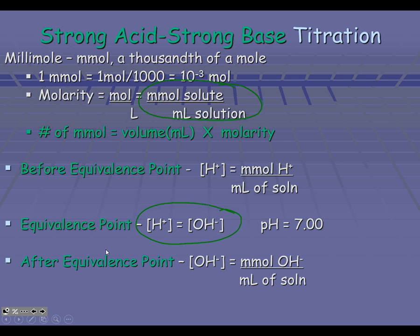After the equivalence point, if you are doing a strong acid being titrated with a strong base, once you go past that equivalence point all your hydrogen has been used up, and now you are just continuing to add more and more hydroxide. So your pH will be based off of your hydroxide ion concentration. You could calculate the pOH and then go to the pH, or you could calculate the hydrogen ions using the Kw equation — there are a couple of different ways to go about this.